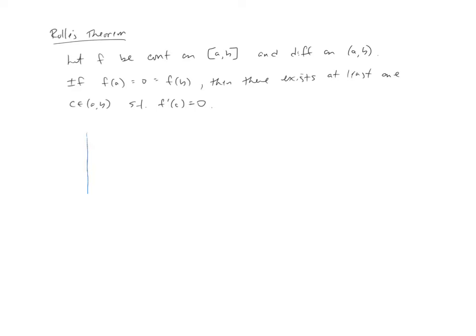So if I draw a picture, here's my x-axis, here's my y-axis, here's my a and here's my b. Those are now x-intercepts. So I've got an intercept here and I've got an intercept here.